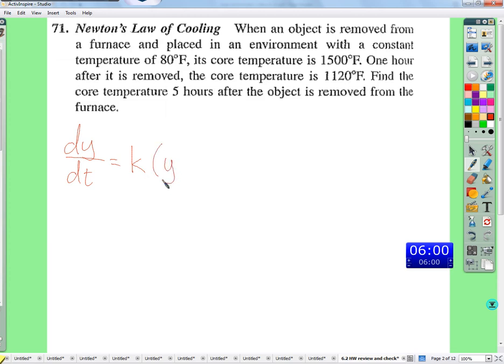To the current temperature, so y minus the current, or the surrounding temperature, the constant surrounding temperature. You've got dy/dt is equal to some constant that we don't know, times y, which is a variable, minus a, which we've been told.